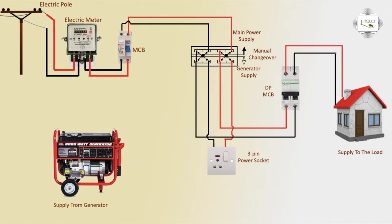PDB line connected. Changeover down means generator power supply is active — generator line input via power socket. In a very simple way, automatic sensor switches between generator line and PDB line function. Thank you.